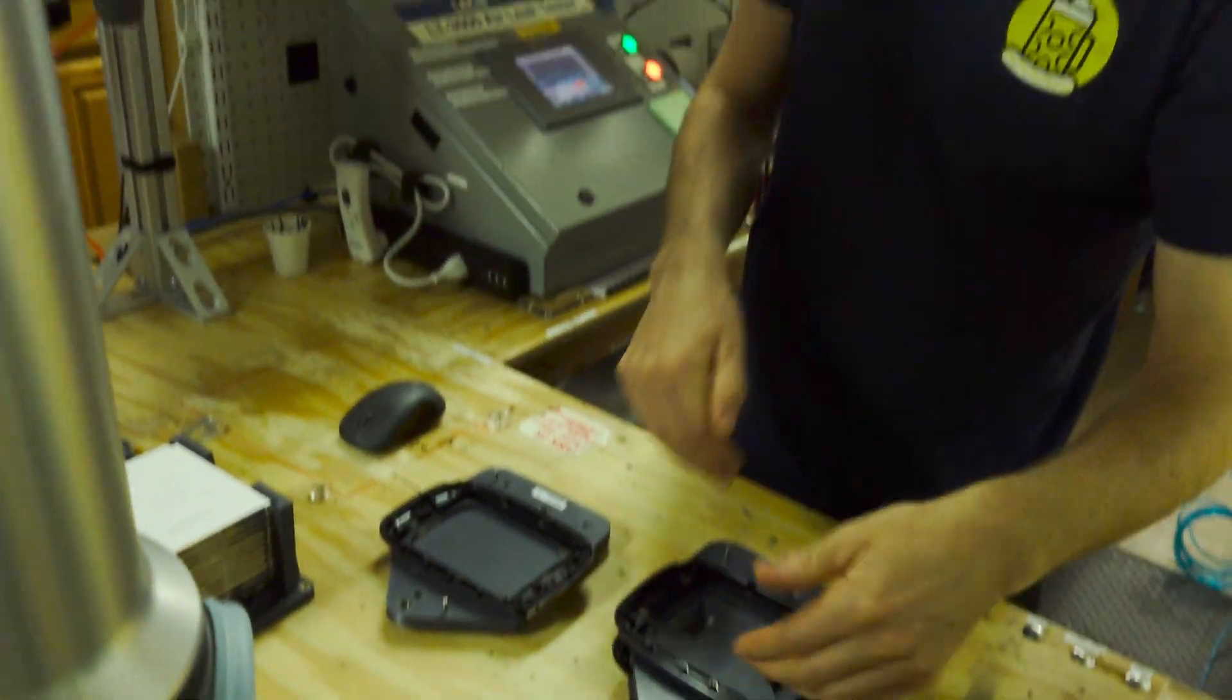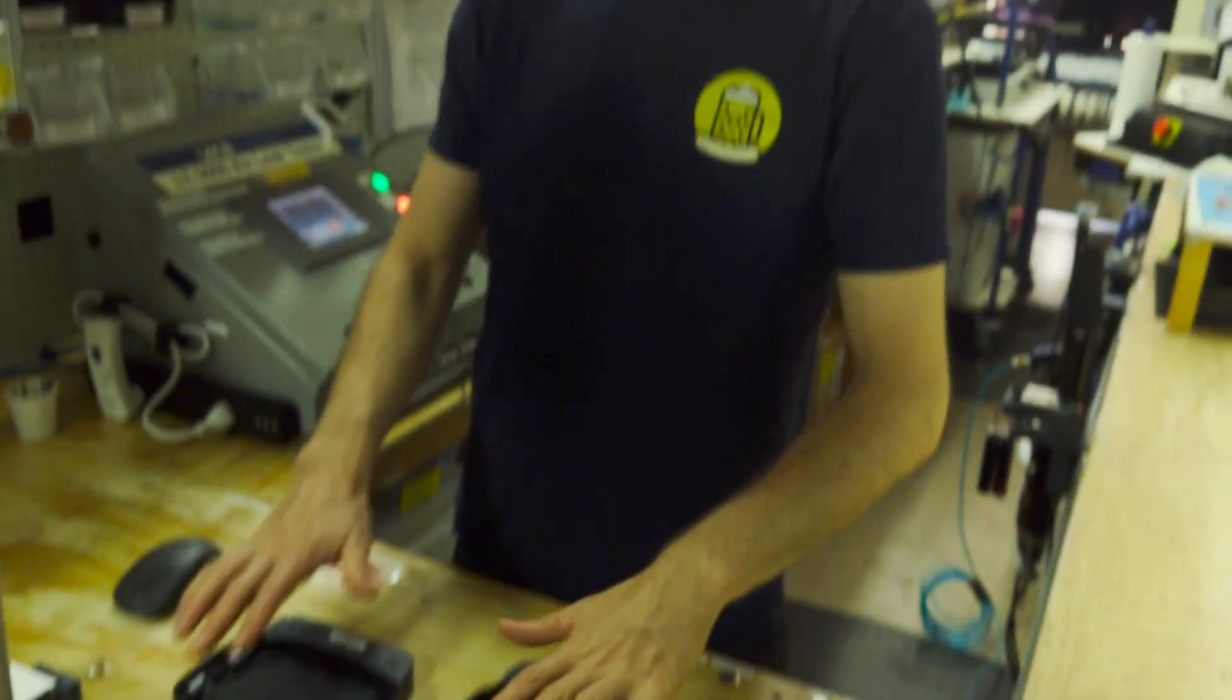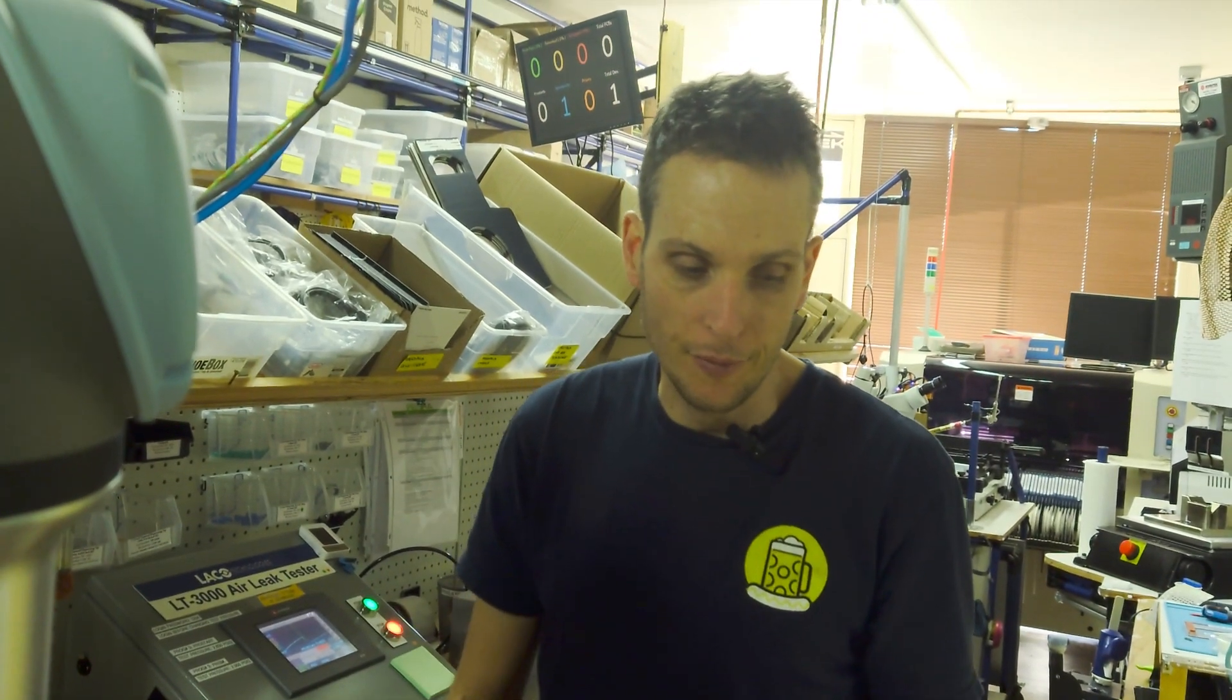And screw this layer of the fixture onto the one that just got glued, apply clamping pressure, and then the robot just repeats that over and over and builds up these stacks of fixtures. So let's see what that looks like.